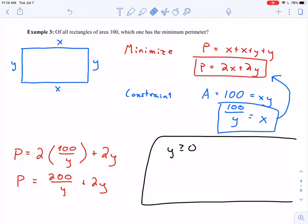You can also think about this just from a practical point of view. You can say, well, if I'm working with a rectangle, it doesn't make any sense if one of my sides is 0. Then I don't have a rectangle. I have nothing. I guess it's a line in that case. So y must be strictly greater than 0.